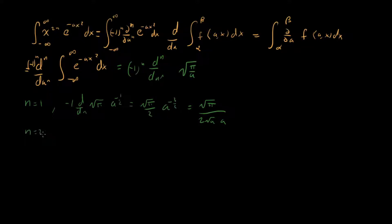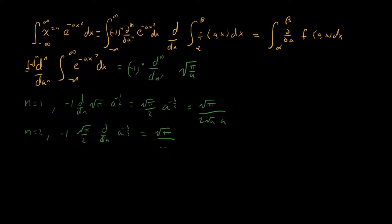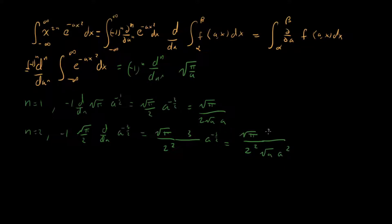For n equals two, we take the derivative of the previous result with an extra minus sign out front, so we get minus one times root pi over two times d/da of a to the minus three halves. This gives us root pi over two squared times three times a to the minus five halves, which we can write as root pi over two squared times root a times a squared times three times one.